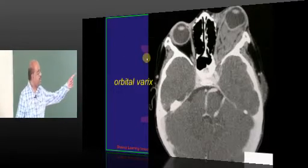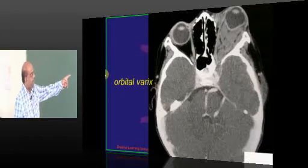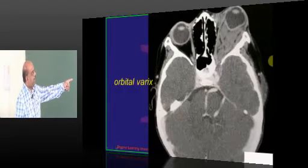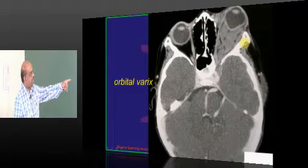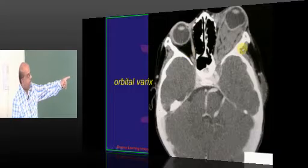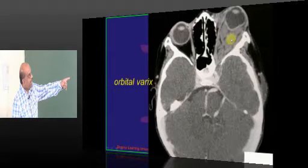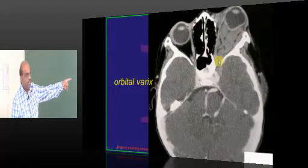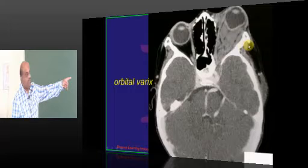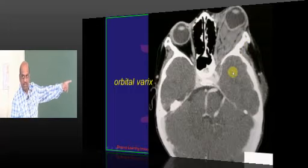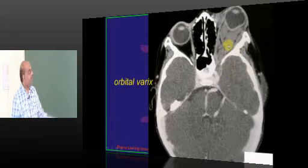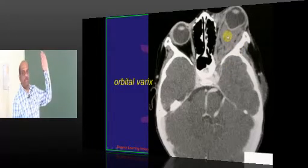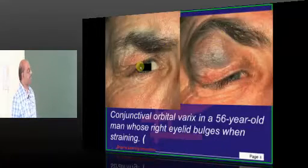What you have here is orbital varices. Are you able to see? This is the normal eye globe. This is the place where you are having that venous accumulation of the vessel, which is orbital varic, leading to proptosis.